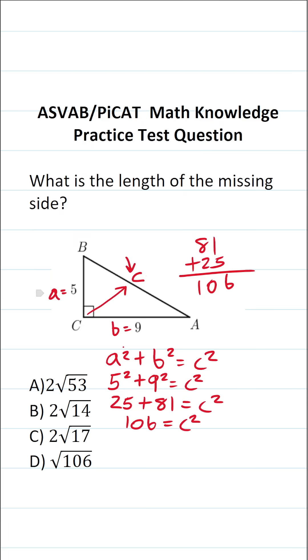Now we wanna know c, not c squared. So to get rid of that square, I'm gonna take the square root of both sides of the equation. In doing so, this crosses out, leaving me with c on this side, equals the square root of 106.